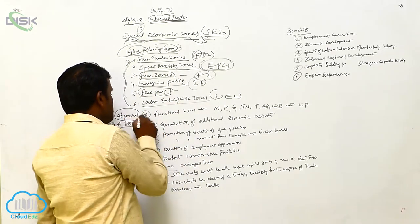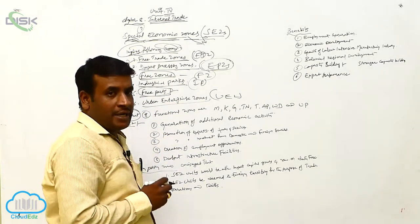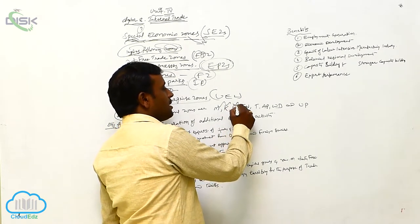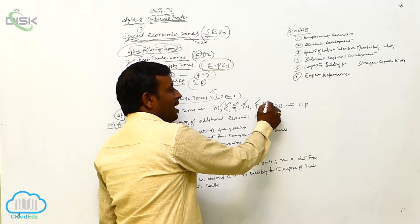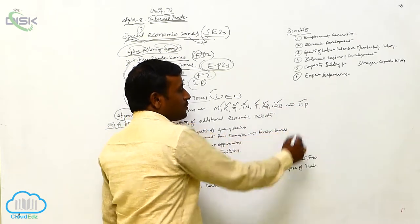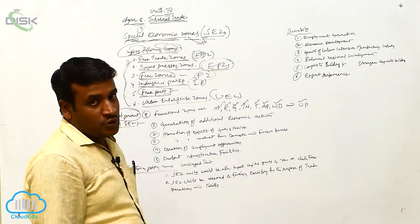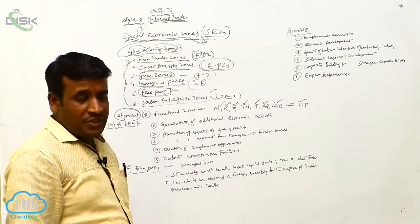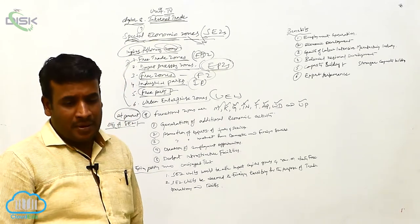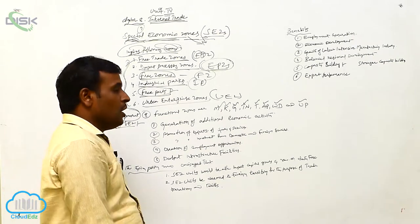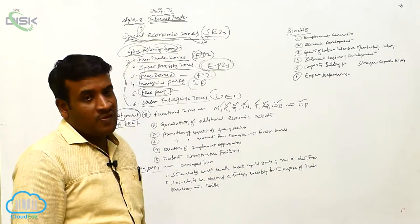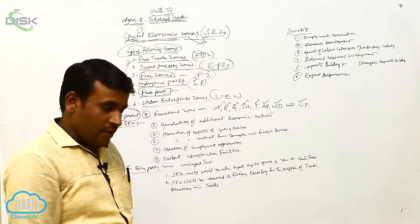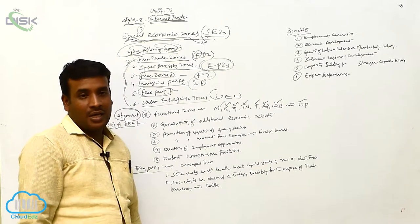At present, there are eight zones established — formulated nearly in Maharashtra, Kerala, Gujarat, Tamil Nadu, Telangana, Andhra Pradesh, West Bengal, and Uttar Pradesh. These are the eight SEZ zones. With these zones, we are establishing various companies and developing products, which will be helpful for the growth and balanced regional development of India.